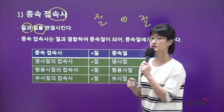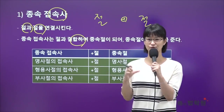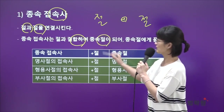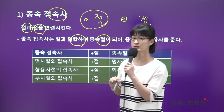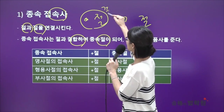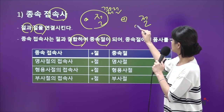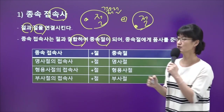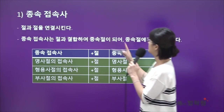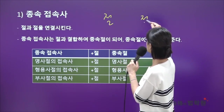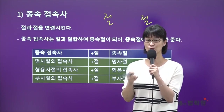종속접속사는 본인이 연결시키는 절 둘 중에 하나와 결합이 돼요. 한 덩어리로 딱 붙어서 그 절을 종속절로 만들어주거든요. 종속접속사가 여기에 오면 자기 뒤에 있는 첫 번째 절과 한 덩어리가 돼서 이 절에게 종속절이라는 명칭을 주고, 또 두 번째 절 앞에 오면 이 절과 한 덩어리로 딱 붙어서 이 절에게 종속절이라는 명칭을 주는 거예요.